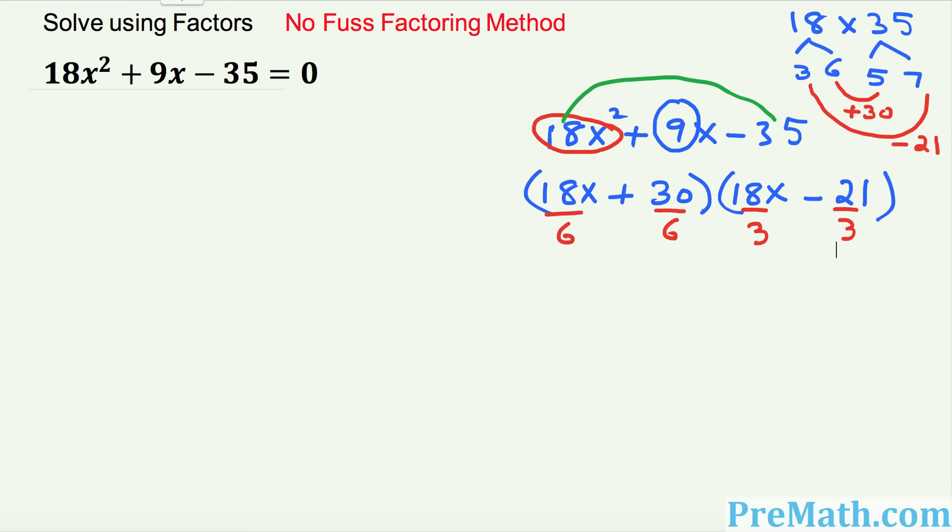And now finally once you do this thing, 6 goes into 18 what? 3 times. So 3x + 5 times this simply become what? 6x minus what? 7. And that turns out to be the factors of our quadratic polynomial. So once we have done this one I want you to put this one back right up here.